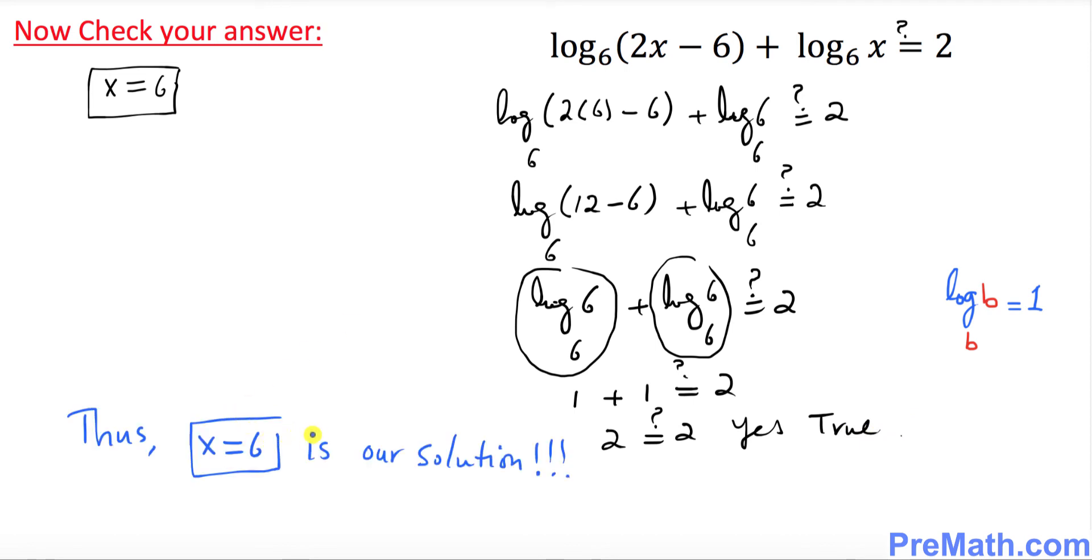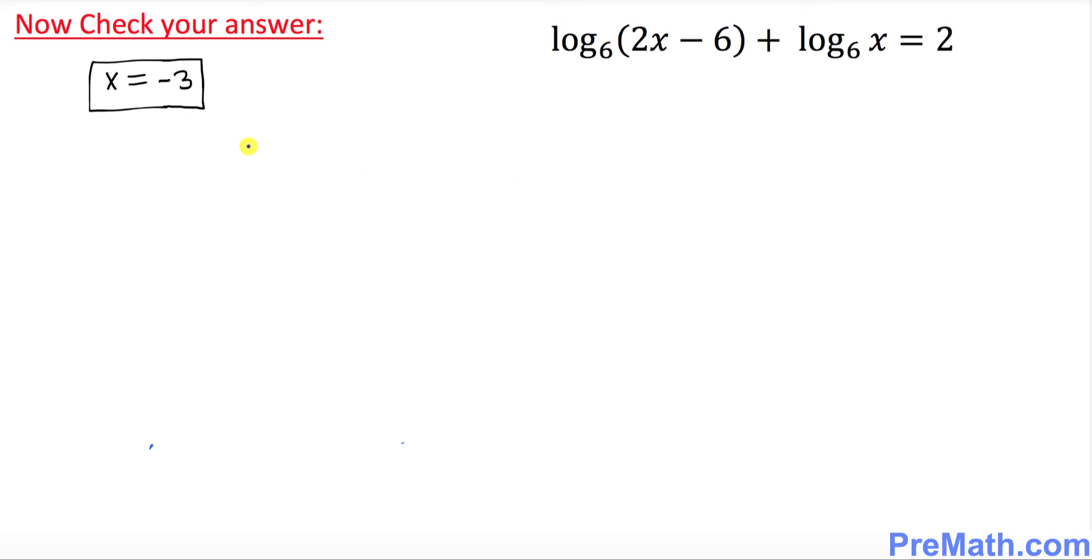So thus x equal to 6 is our solution. And finally, we're going to check our answer for our other solution, x equal to negative 3. Let's plug it in this original equation. So log of 2 times negative 3 minus 6 with base 6 plus log of negative 3 with base 6. We're going to see if this equals to 2. So this becomes log of negative 12 with base 6 plus log of negative 3 with base 6 equals to 2.